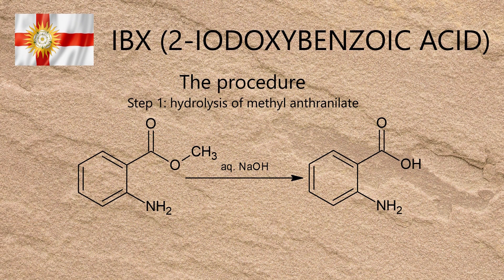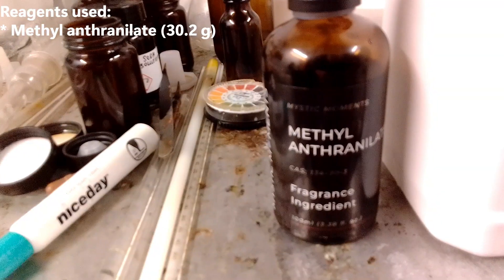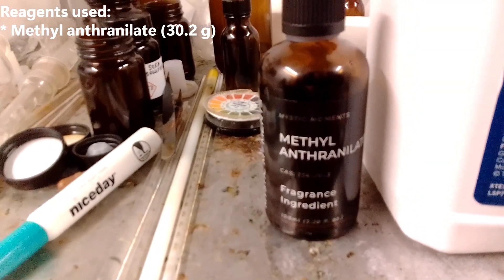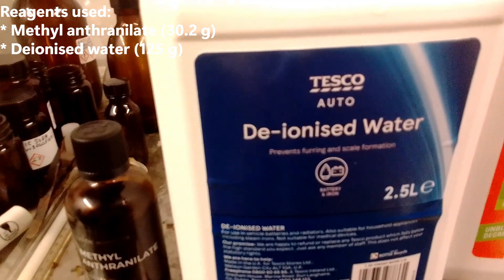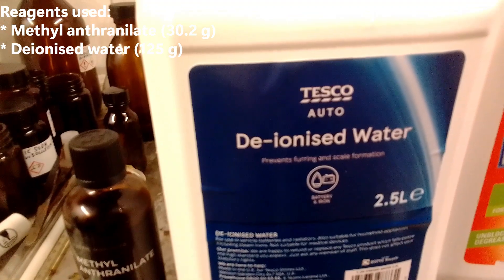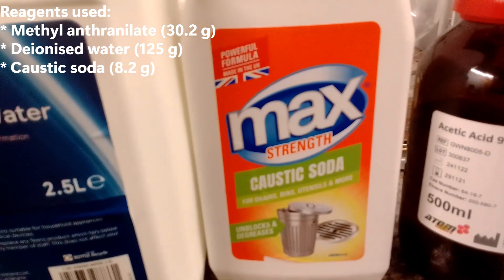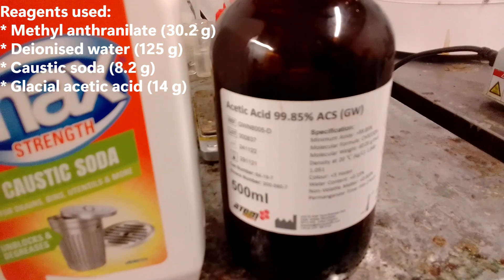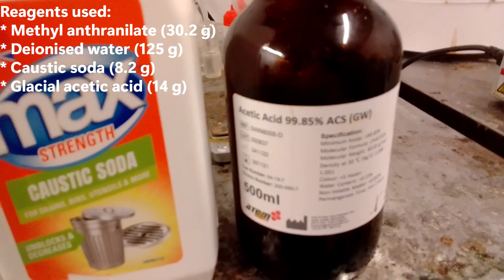The easiest way to make anthranilic acid from methyl anthranilate was to hydrolyse the ester with caustic soda. I did this on a scale of 0.2 moles. The reagents used were methyl anthranilate, 30.2 grams; deionised water, 125 grams; caustic soda, 8.2 grams; and glacial acetic acid, 14 grams.